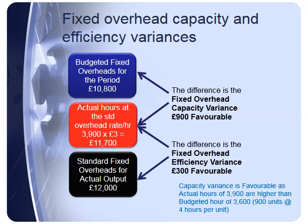The fixed overhead efficiency variance is the difference between £11,700 and the standard fixed overheads for actual output of £12,000 — a £300 favourable variance. It's favourable because I should have been using more hours than I actually did, so I was working those fixed overheads in a more efficient manner.